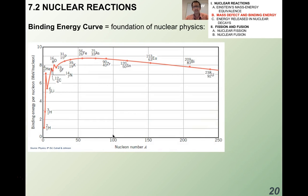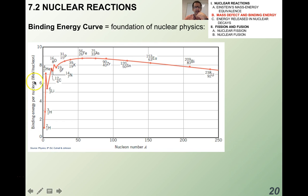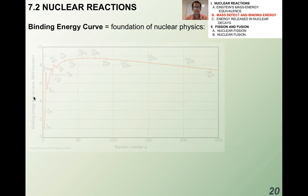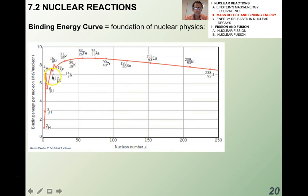You may have seen the binding energy curve — it's really the foundation of nuclear physics. On the x-axis it has the nucleon number A, and on the y-axis it has the binding energy per nucleon, the number you just found. Carbon-12 at 7.68 MeV per nucleon sits somewhere up in the middle of this curve.